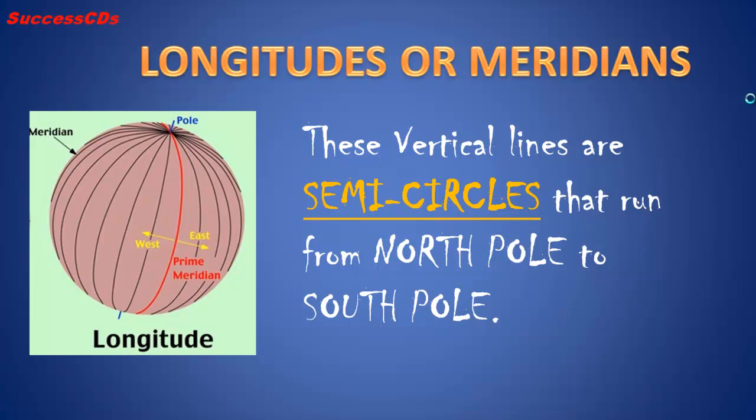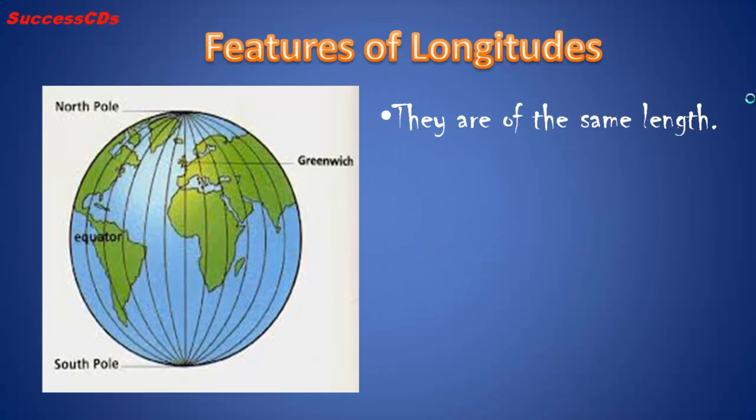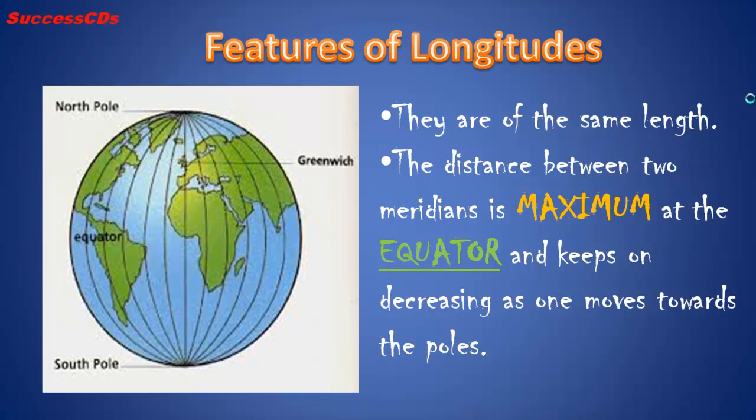Longitudes are vertical lines. They are semicircles and run from North Pole to South Pole. They are of same length. The distance between two meridians is maximum at the equator and keeps on decreasing as one moves towards the poles.